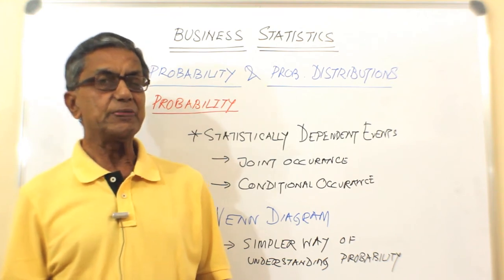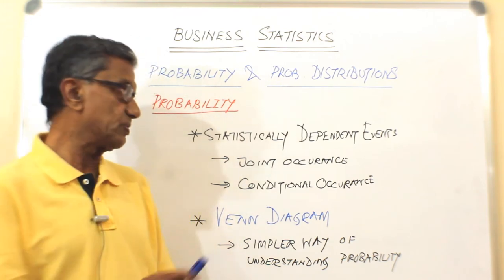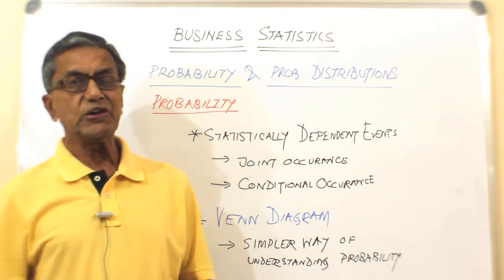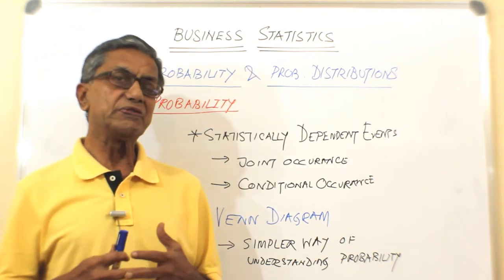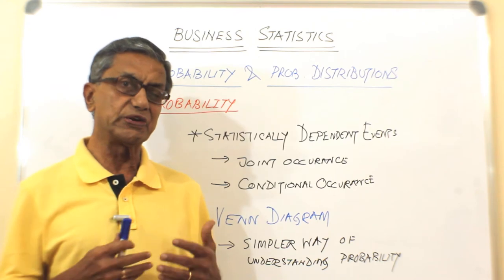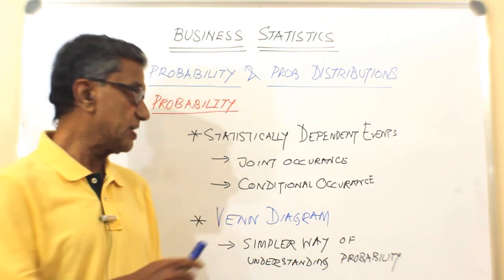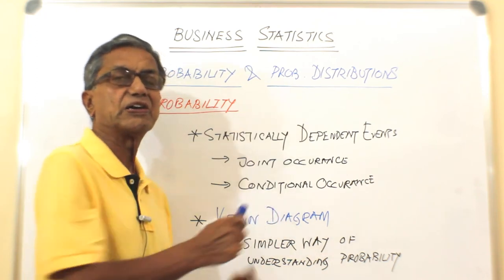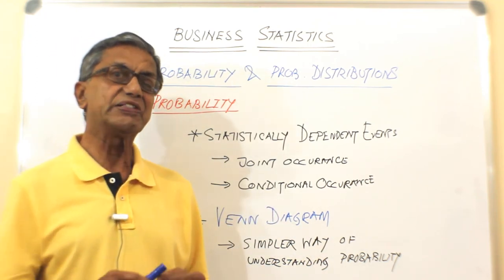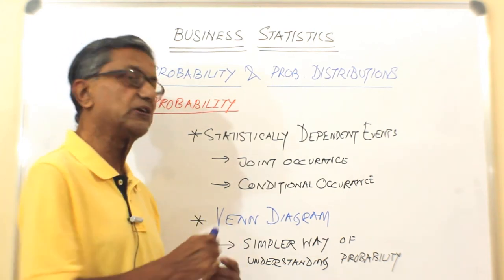Under dependent events there are two possible types of events. One is joint occurrence, another one is conditional occurrence. Joint occurrence is at least two activities or two events occurring together one after the other, that is in succession. Conditional occurrence is an event has occurred and, given that event has occurred, another event occurring.